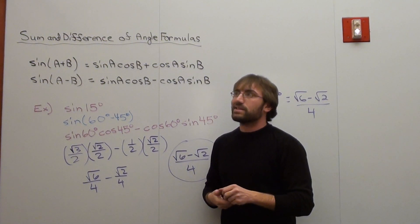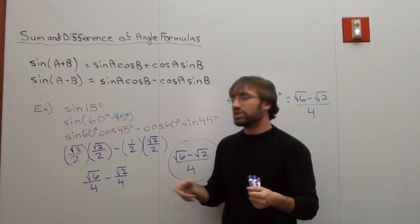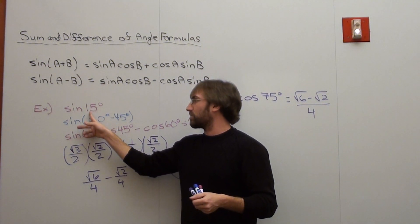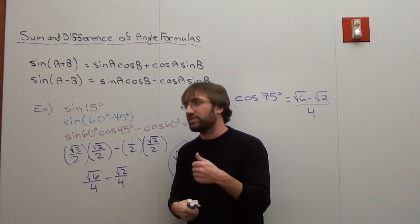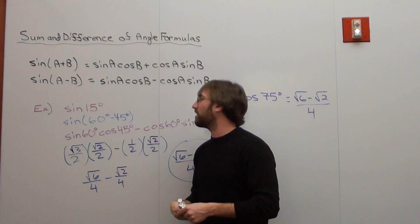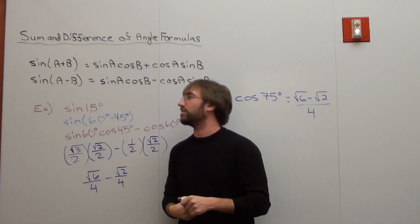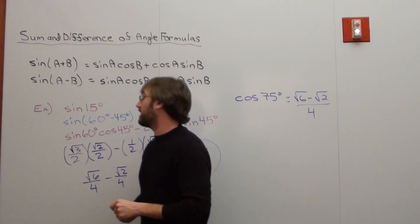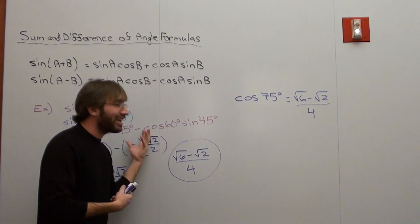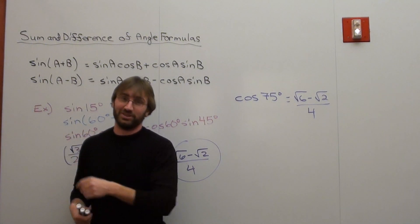These formulas are useful not just with identities, but teachers most often use them to figure out specific angle values like 15 degrees and 75 degrees. They do work with identities as well. With that said, I hope you found that helpful. Have a good day. Goodbye.